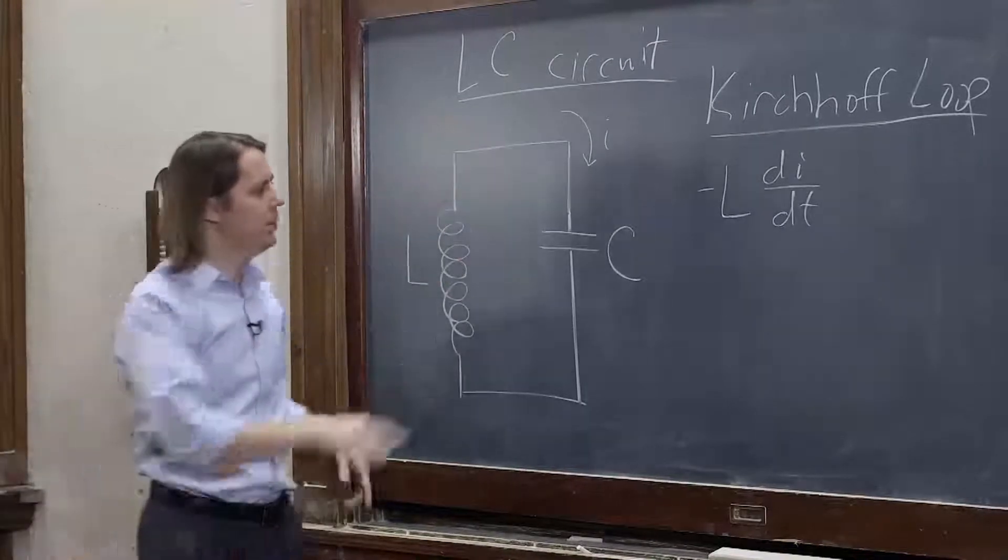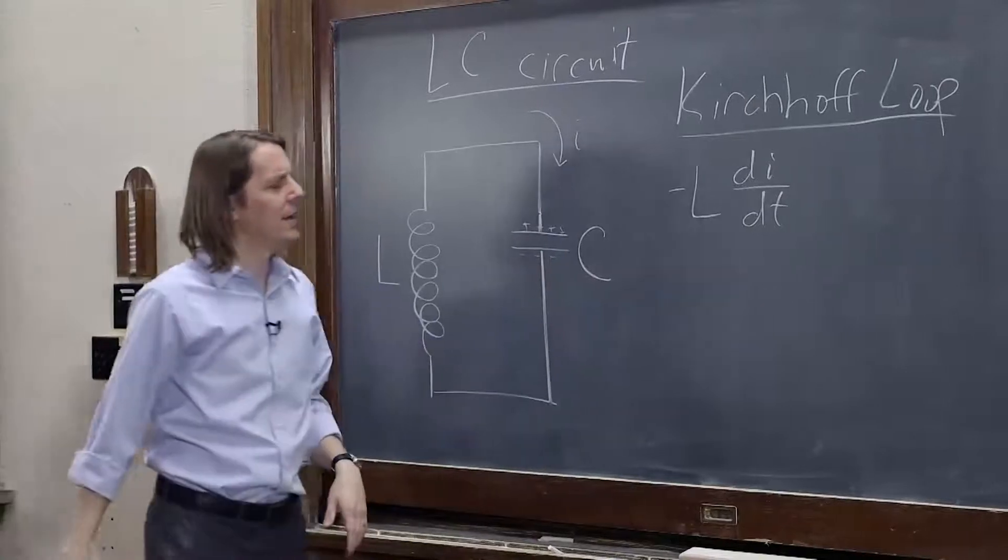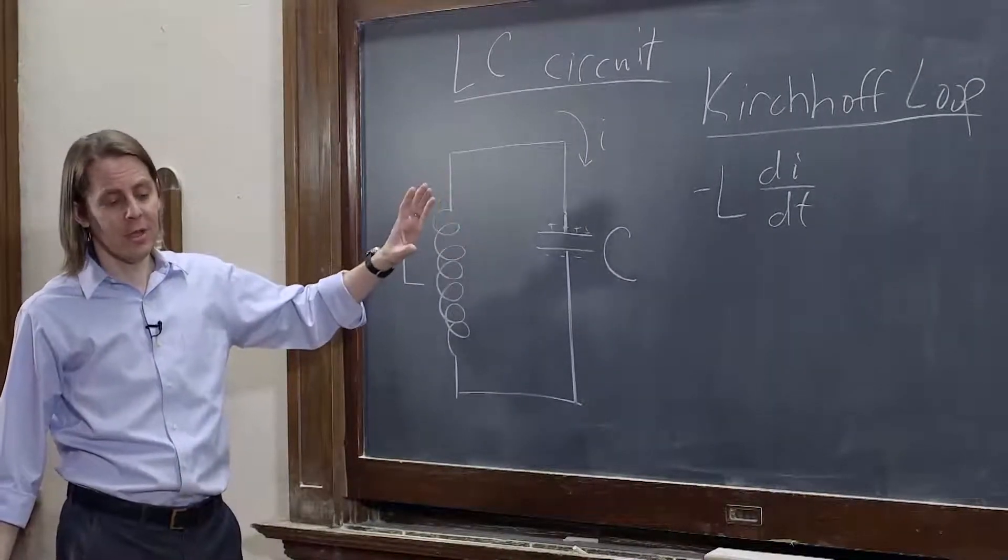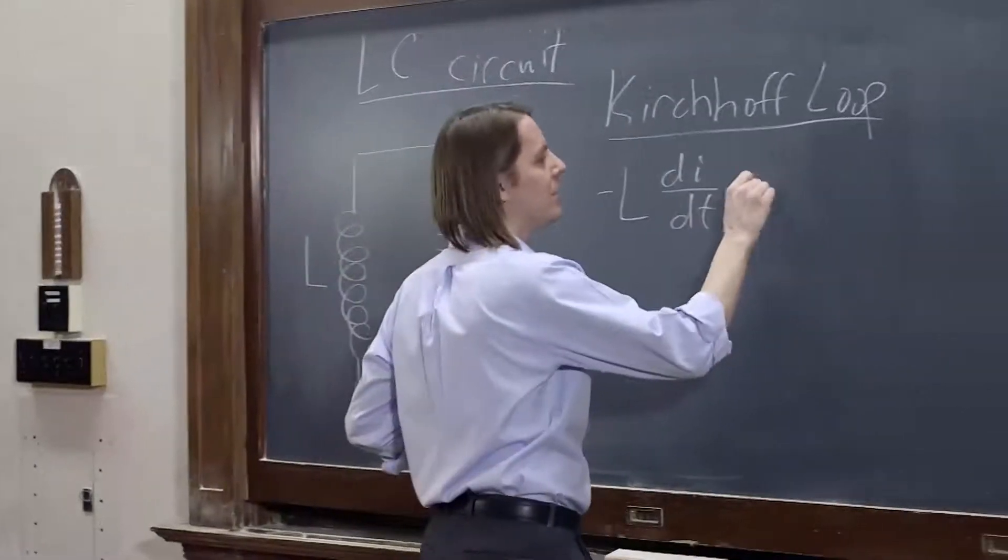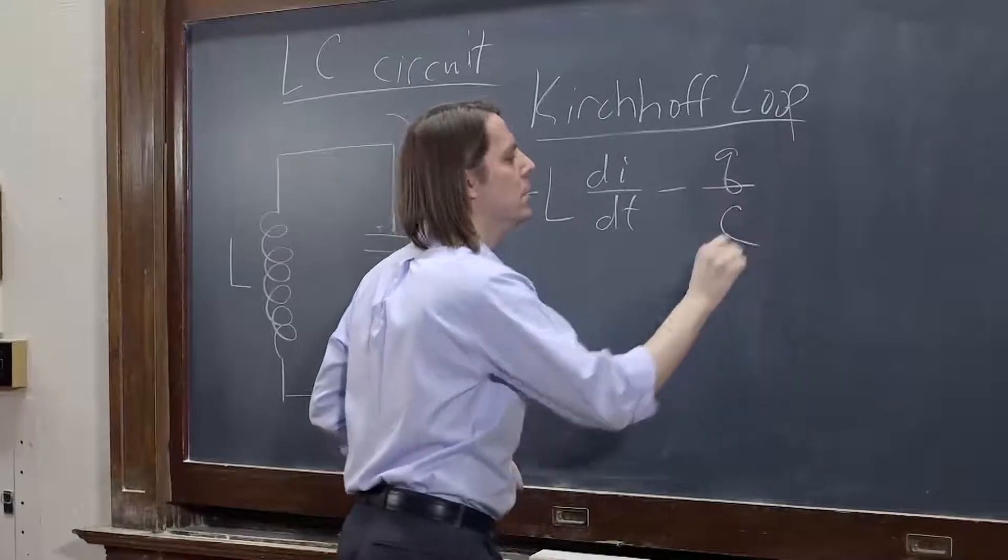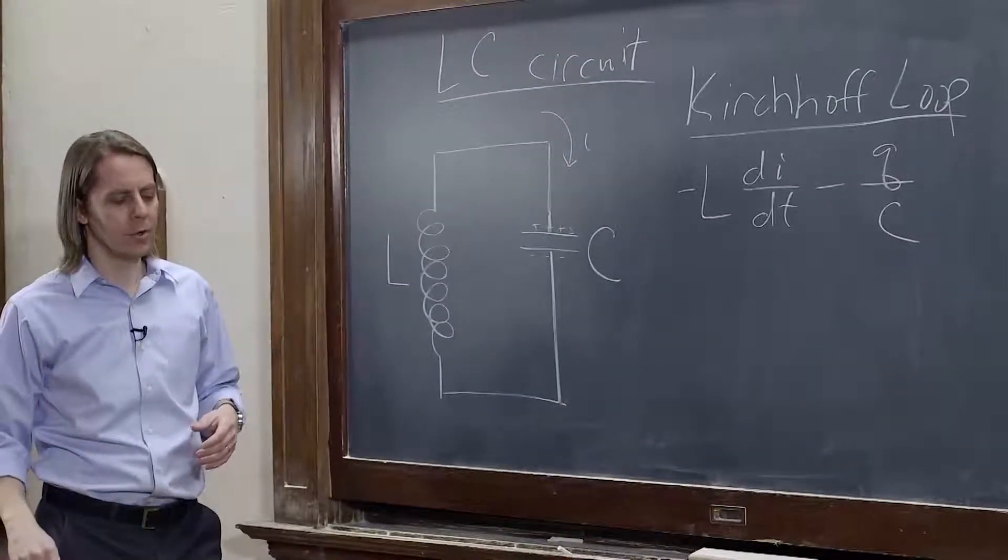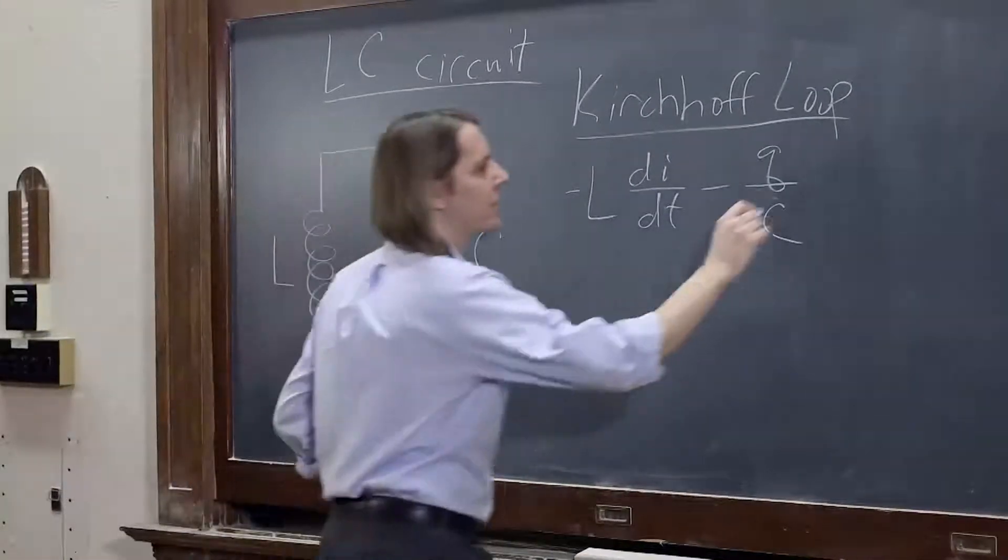And then here, the current flows this way. Here's the positive plates. Here's the negative plates. The drop across the capacitor doesn't depend on the current. It depends on the charge that is built up on the plates. So that's minus Q over C. So now I'm using little i for current, little q for charge. And we've gone all the way around the loop. So those are equal to zero.